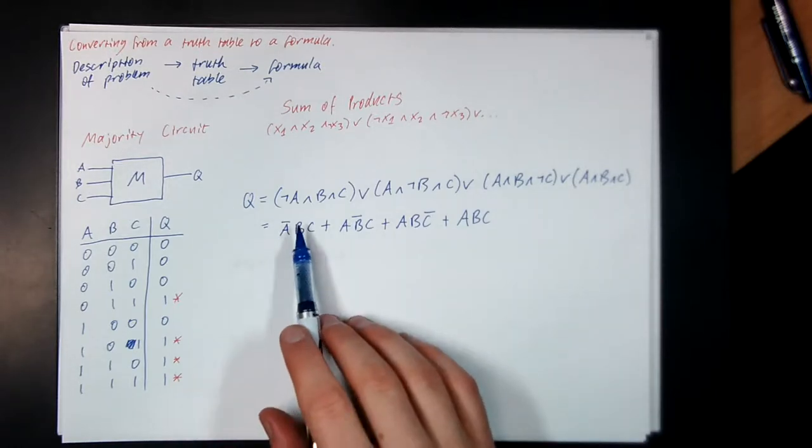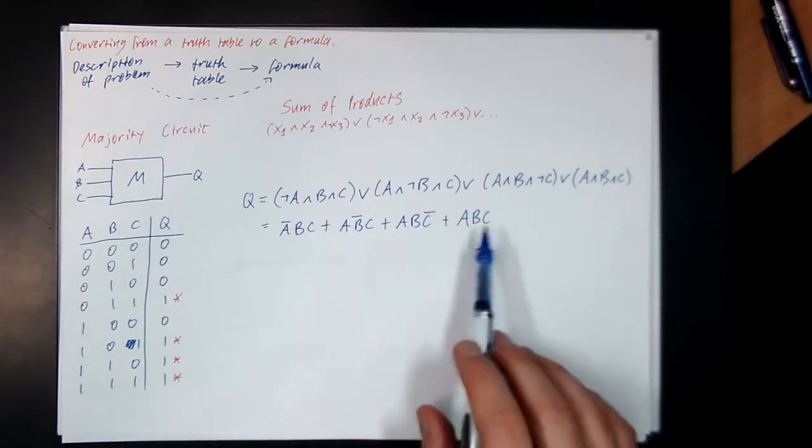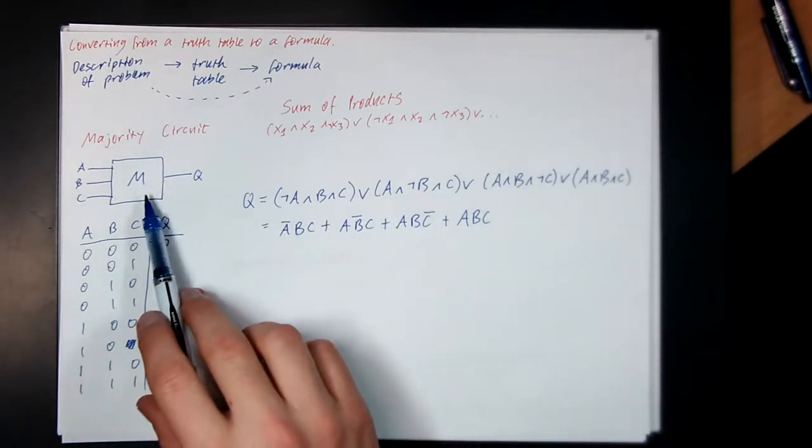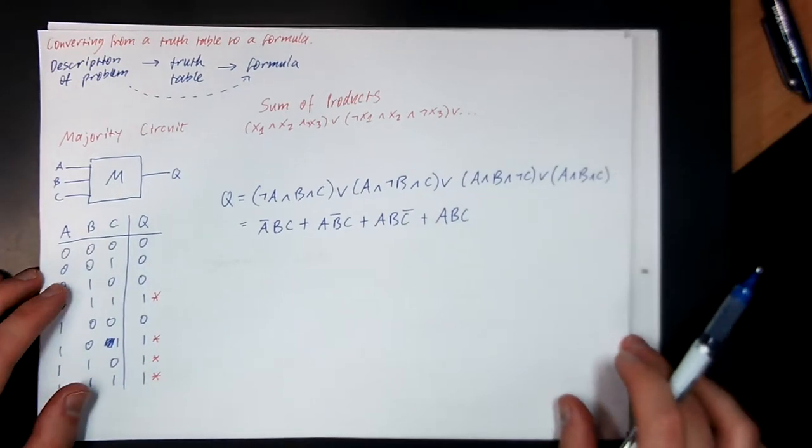So, now I've got a Boolean equation for this majority circuit. I can now actually draw what the circuit would look like if we tried to build this box out of the logic gates that we have, ANDs, ORs and NOTs.